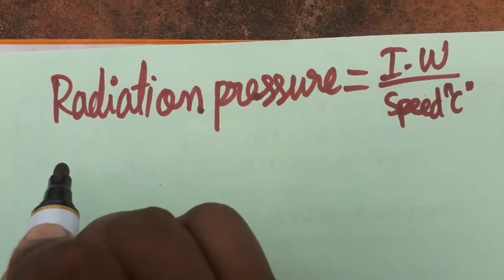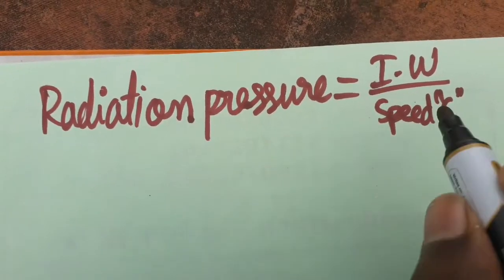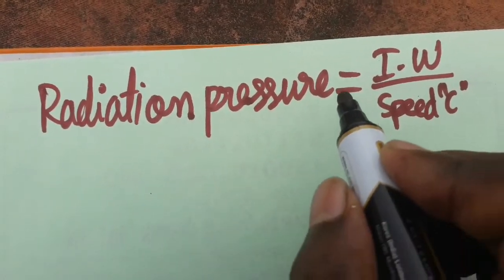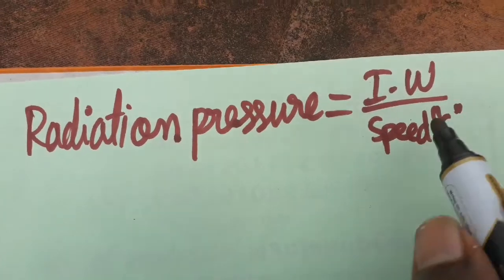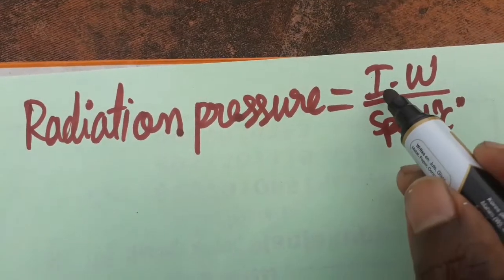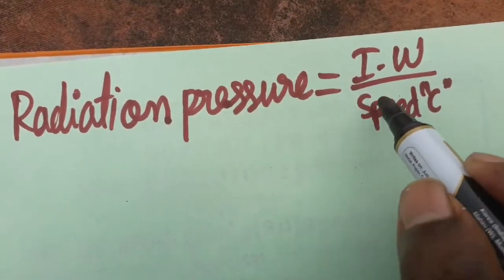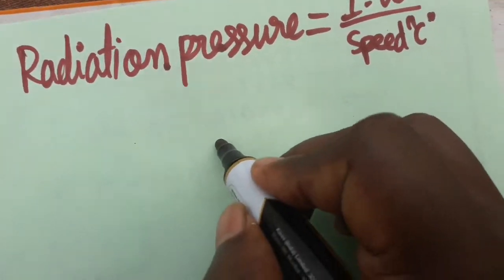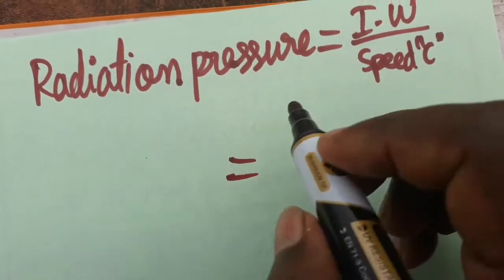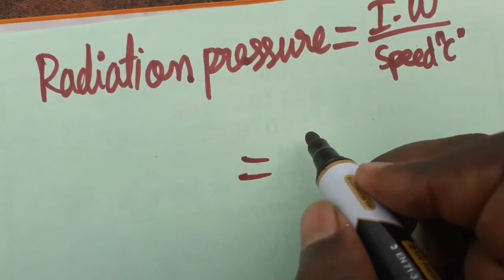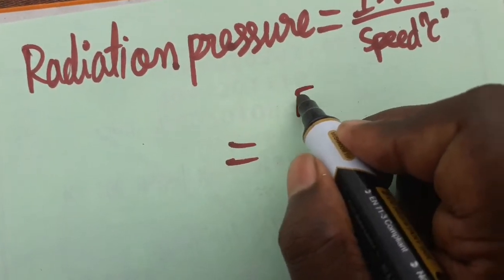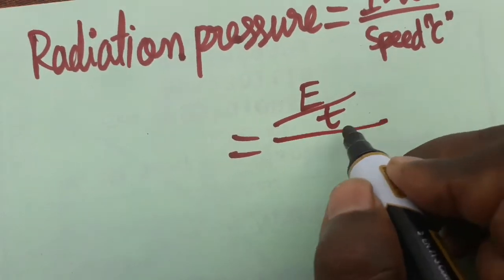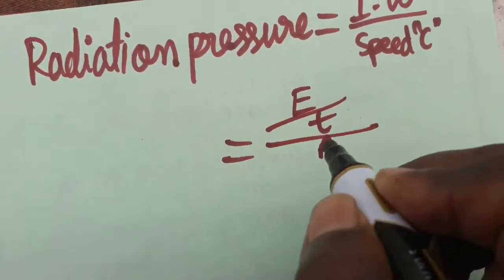Today we are going to discuss radiation pressure — its SI unit and dimensional formula. Radiation pressure is the intensity of a wave per speed of light. The intensity of a wave is energy per unit time divided by area.